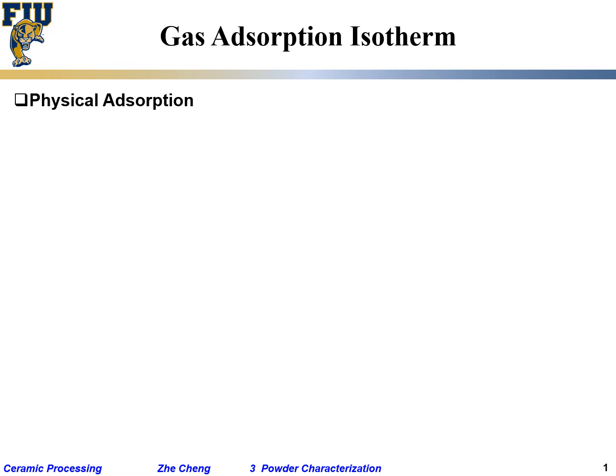In this class we are going to talk about surface area and porosity, specifically so-called gas adsorption, because gas adsorption can be used to reasonably accurately measure surface area and porosity. That's why we discuss it. Last time we talked about gas and solid interaction, and there are two types of solid surface interactions.